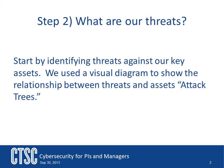Attack trees are multi-level diagrams consisting of one root, leaves, and children. From the bottom up, child nodes are conditions which must be satisfied to make the direct parent node true. When the root is satisfied, the attack is complete. Each node may be satisfied only by its direct child nodes. A node may be the child of another node; in such a case, it becomes logical that multiple steps must be taken to carry out an attack.